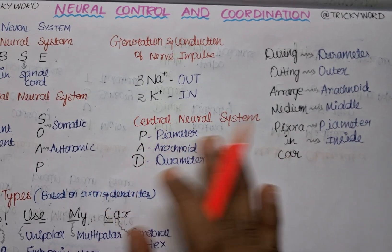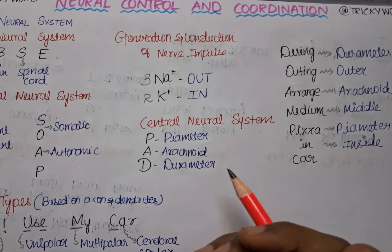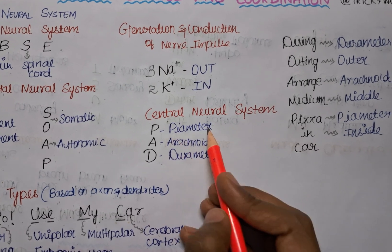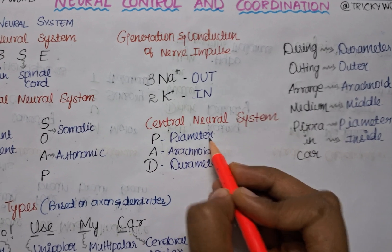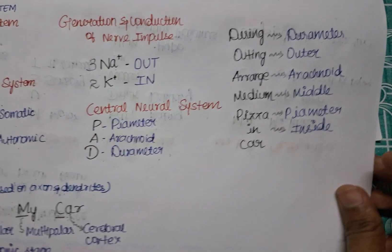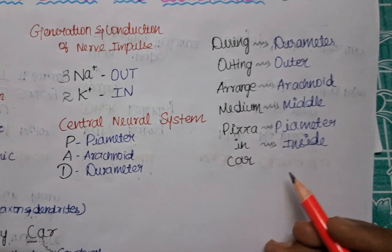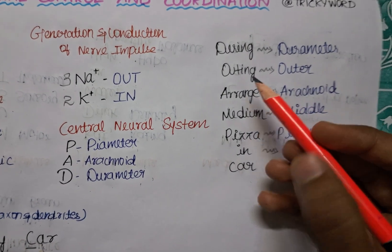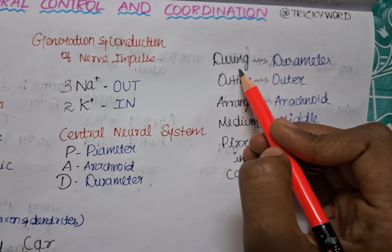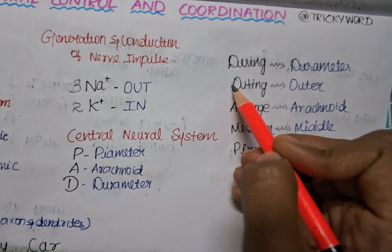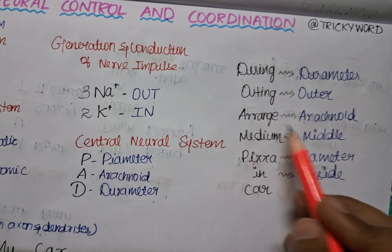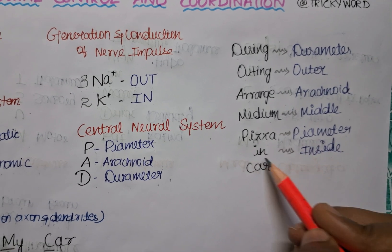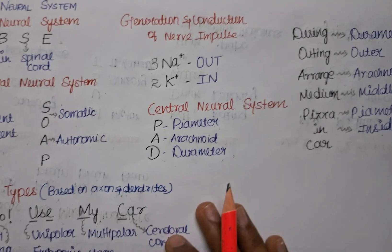Moving to the central neural system — specifically the brain. Our brain is covered with three layers called meninges. The trick is PAD — P for pia mater, A for arachnoid membrane, D for dura mater — from innermost to outermost. To remember the order, use 'During outing arrange medium pizza in car' — During/Dura mater is outermost, Arrange/Arachnoid membrane is middle, Pizza/Pia mater is innermost (inside).